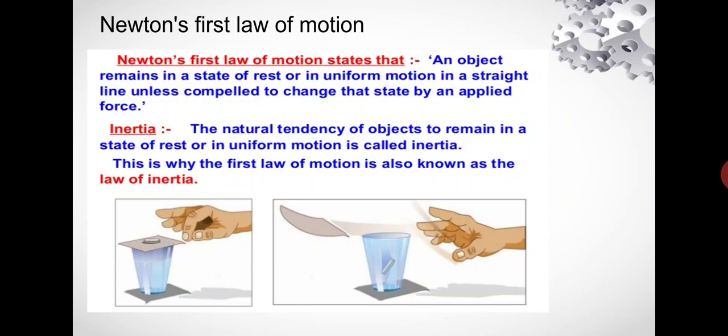Newton's first law of motion states that an object remains in a state of rest or in uniform motion in a straight line unless compelled to change that state by an applied force.